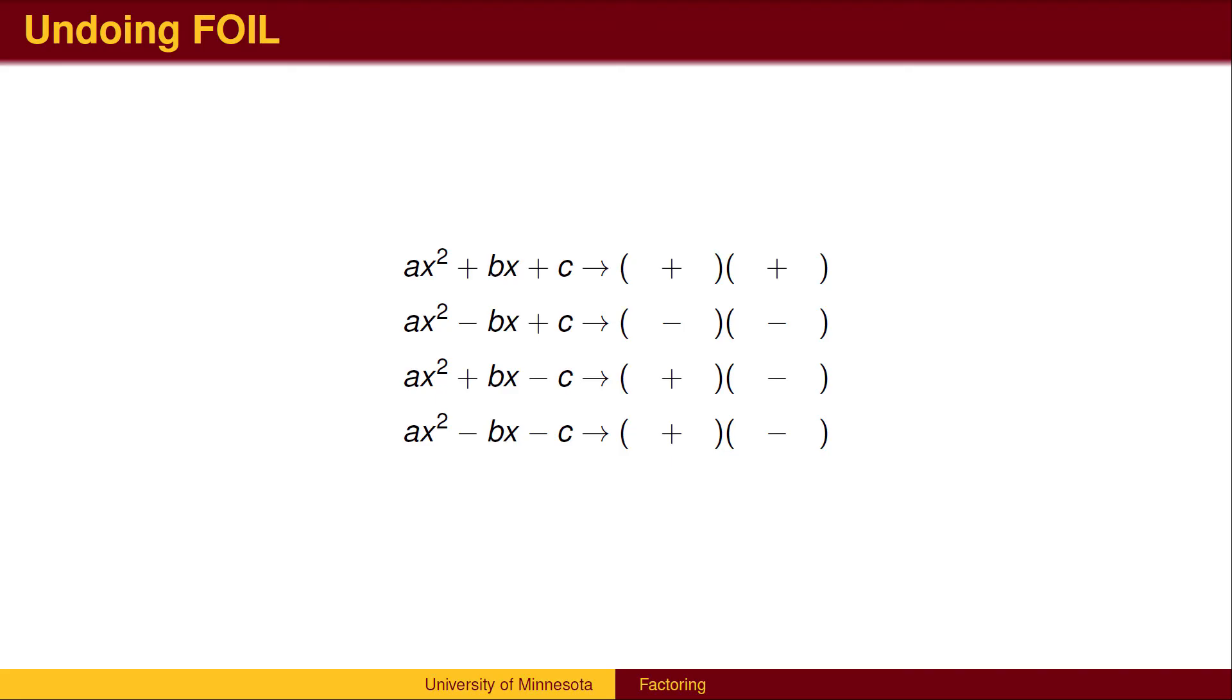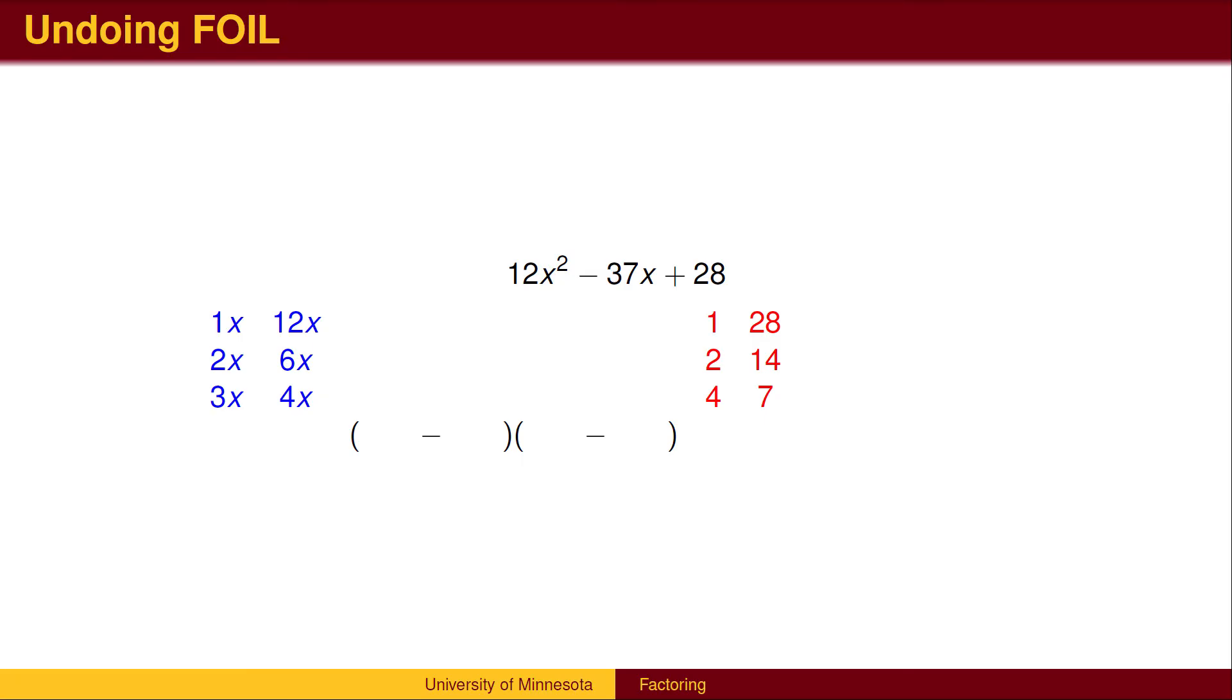If the constant term in the expanded form is negative c, then there will be one factor with the constant added and the other factor with the constant subtracted. What will the middle term look like? It will depend on whether the outside term or inside term is larger.